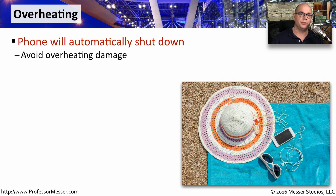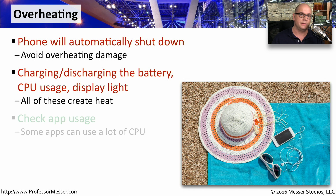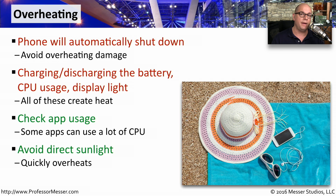Our mobile devices constantly monitor internal temperature, and if the temperature gets too high the device will automatically turn itself off to avoid overheating or heat damage. Charging or discharging the battery, heavy CPU usage, and running the display constantly all create heat. One way to check what applications are using the most CPU is to view the application usage on the mobile device. You should also always avoid leaving the device in direct sunlight, as this will heat it very quickly and cause it to shut down automatically.